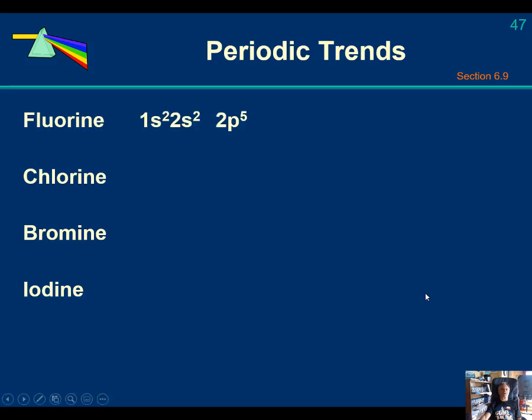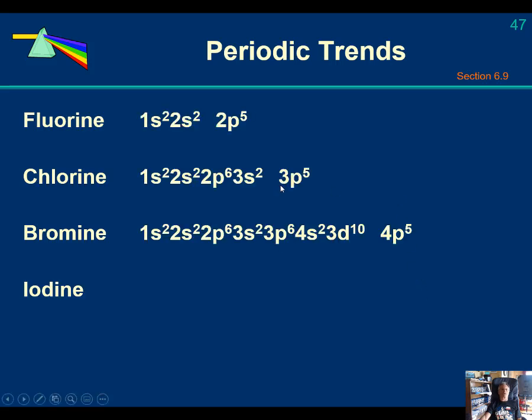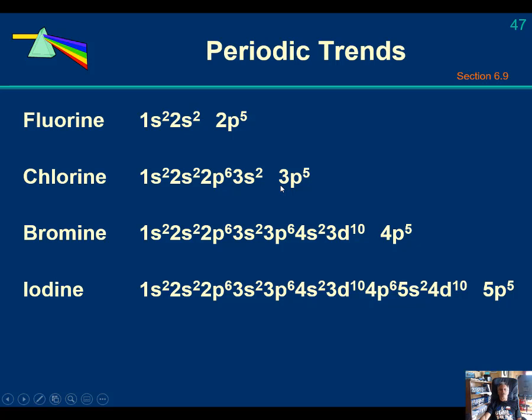Periodic trends for non-metals. Here's fluorine, chlorine, bromine, and iodine. These are the halogens. If you take a look, they all have 5 electrons in the P subshell.